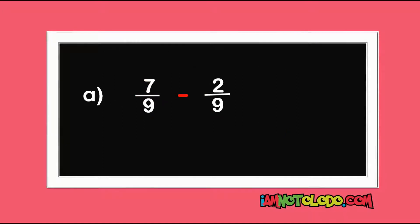The first step is to check the denominators. The denominators are the same, so we don't touch it. Next step: 7 minus 2 is 5 over our 9. This is our final answer. Whenever the denominators are the same, don't touch it.